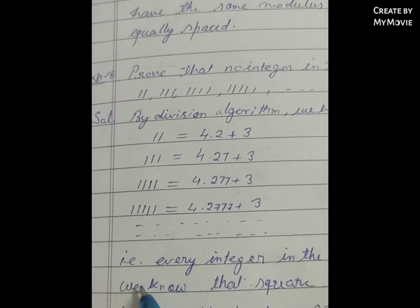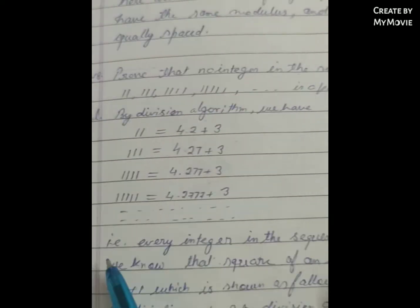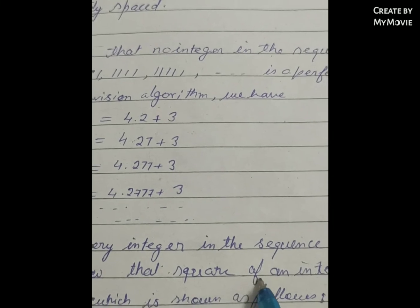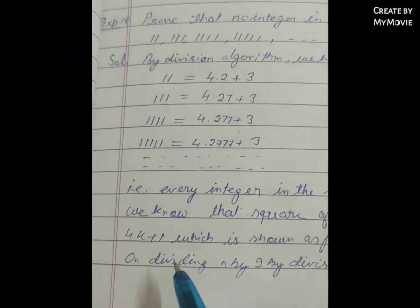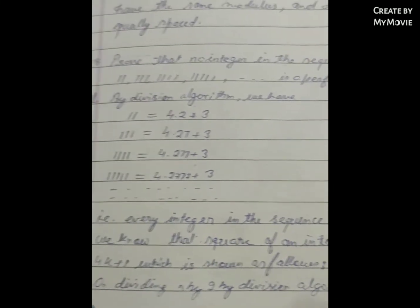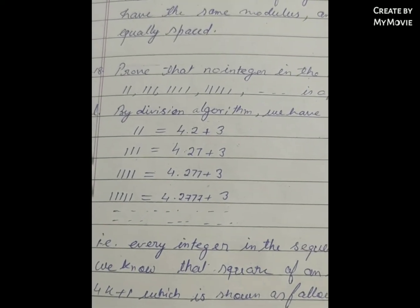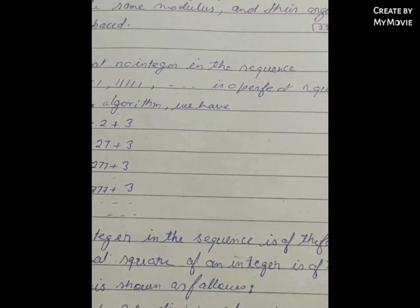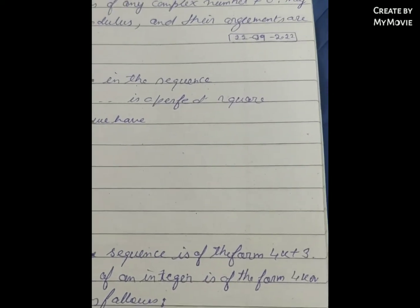Every integer in the sequence is of the form 4k+3. We know that the square of any integer is of the form 4k or 4k+1. On dividing n by 2 using the division algorithm, n is of the form 2k or 2k+1.